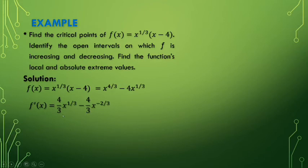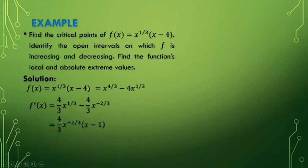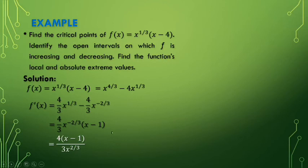Using the power rule: f'(x) = (4/3)x^(1/3) - (4/3)x^(-2/3), because 4 times (1/3) gives the coefficient 4/3, and (1/3) - 1 = -2/3. To find its zeros, simplify back to a product by factoring out (4/3)x^(-2/3): f'(x) = [4(x - 1)] / [3x^(2/3)]. From here, we find critical points by finding where f' equals zero or is undefined. x = 1 makes the numerator zero (1 - 1 = 0), and x = 0 makes f' undefined because x is in the denominator.